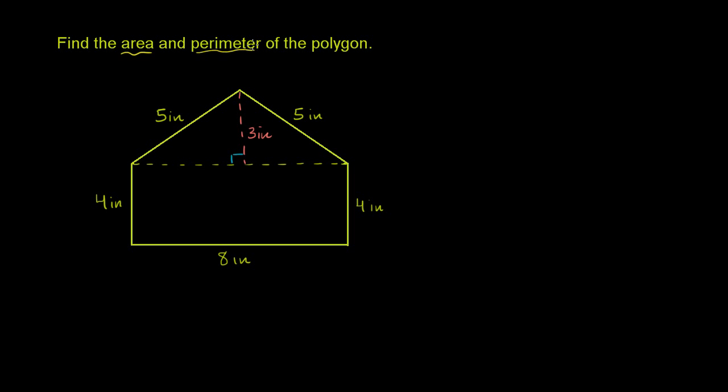Find the area and perimeter of the polygon. So let's start with the area first. So the area of this polygon,